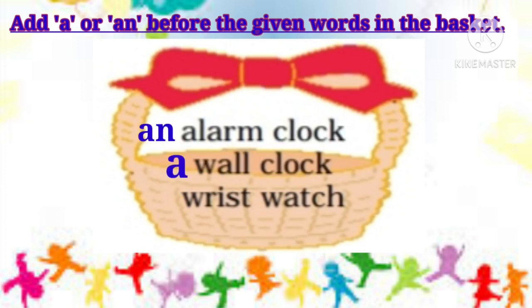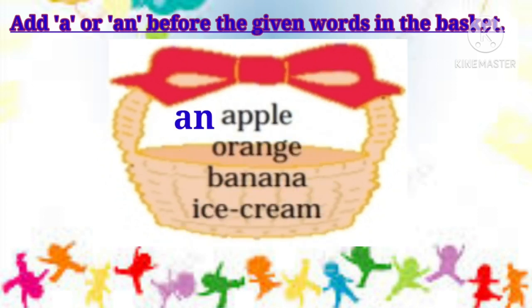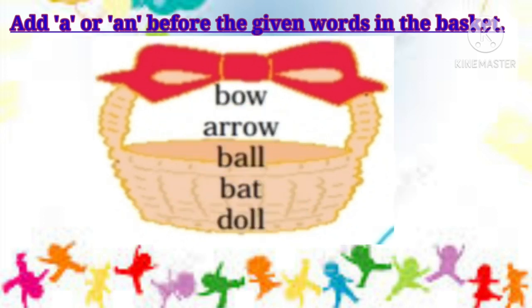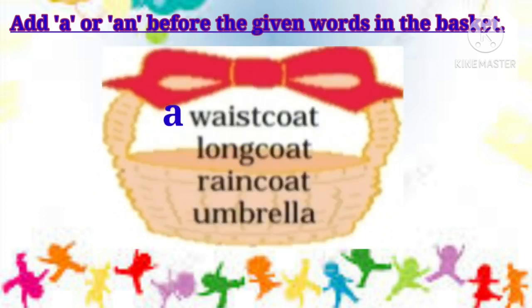A wall clock, a wrist watch, an apple, an orange, a banana, an ice cream, a bow, an arrow, a ball, a bat, a doll, a waistcoat, a long coat, a raincoat, and an umbrella.